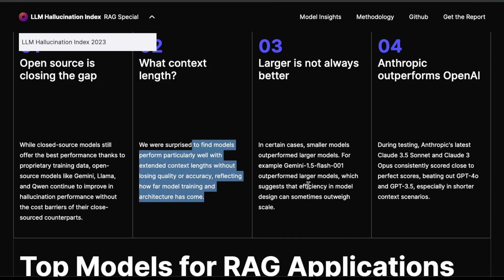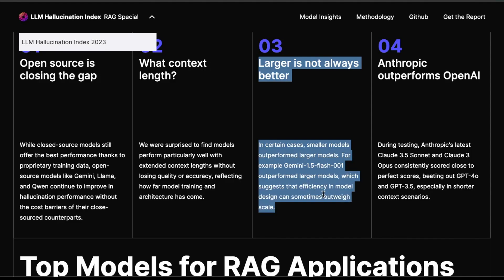The third finding is that larger is not always better. Smaller models are now outperforming larger models — this is a trend we're seeing across the board, not just for RAG specific tasks. For example, Gemini 1.5 Flash 001 outperforms larger models, which suggests that efficiency in model design can sometimes outweigh scale. A lot of the recent announcements are releasing bigger models, but these bigger models are used for specific use cases and won't really apply to all of them. One idea is using bigger models to create more effective smaller models through distillation, or quantizing models, which is a different topic.